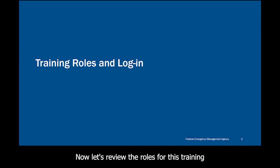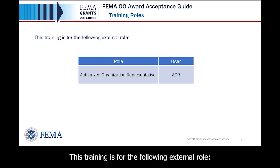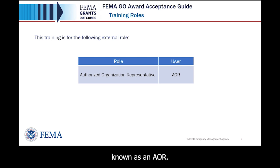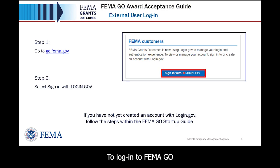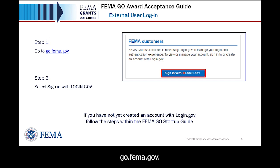Now let's review the roles for this training and how to log in as an external user. This training is for the following external role: an authorized organization representative, known as an AOR. To log in to FEMA GO, the first step is to go to the FEMA GO webpage, go.fema.gov.